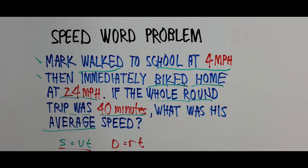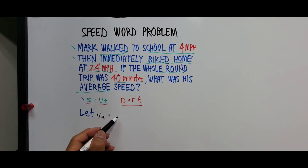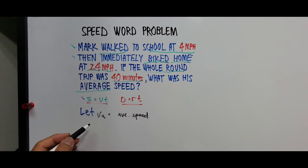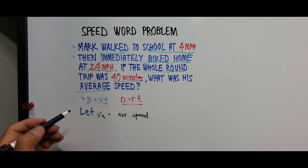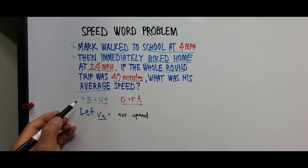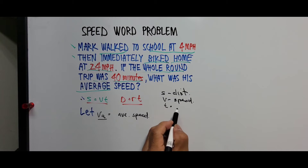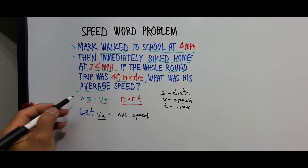Since it takes longer to walk to school than biking, we should consider the whole distance — distance walked and distance biked. Let's define our variable: V_A is the average speed, which is what we need to find. Based on the problem, to get the average speed we need to find the total distance and the total time, so we use the formula S equals V times T.